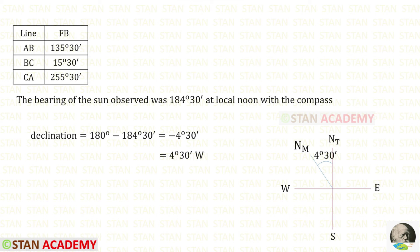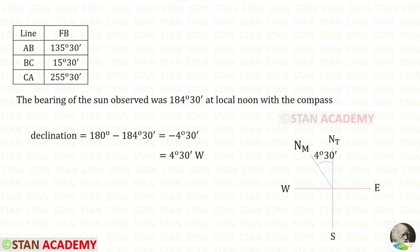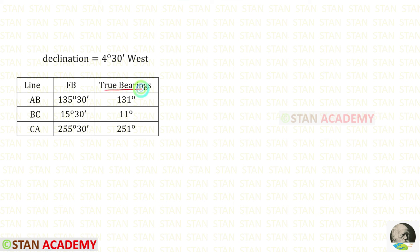We have calculated all of the forebearings. In the question, it is given that the bearing of the sun observed was 184 degrees 30 minutes at local noon with the compass. At local noon, the bearing of the sun should be 180 degrees. Let us find the declination: 180 degrees minus 184 degrees 30 minutes. We will get a negative value, which means the declination occurs towards the west. Now we are going to find the true bearings. From the magnetic bearings, we have to subtract 4 degrees 30 minutes. When we do that, we will get the true bearings.